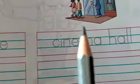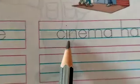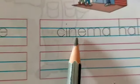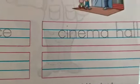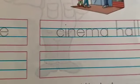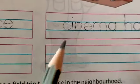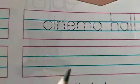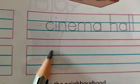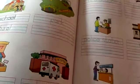Next one is cinema hall — C-I-N-E-M-A, cinema, H-A-L-L, hall — cinema hall. Trace the letters cinema hall, then rewrite in this column. Children, write this homework in your home and send on my WhatsApp number. Thank you.